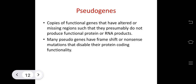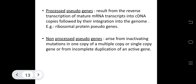Pseudogenes are copies of functional genes with altered or missing regions that presumably do not produce functional protein or RNA. Many pseudogenes have frameshift or nonsense mutations disabling their protein-coding function. Processed pseudogenes result from reverse transcription of mature mRNA into cDNA copies followed by integration into the genome. Non-processed pseudogenes arise from inactivating mutations in one copy of a gene or from incomplete duplication of an active gene.